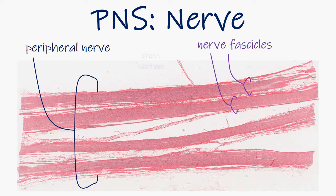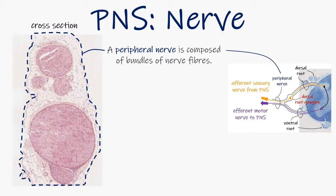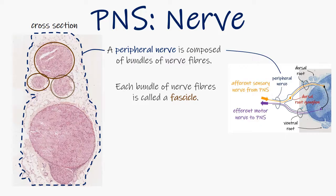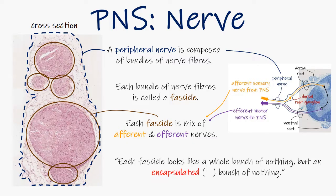Now let's look at a peripheral nerve in cross-section. What this means is that we will look down the length of the nerve fascicles in the manner, that is, in cross-section, that you will most routinely see them in many of the connective tissues and organs of the body. Here is an example of a peripheral nerve in cross-section. Begin by orienting yourself to this slide, which is a peripheral nerve composed of bundles of nerve fibers. Each of these bundles is called a fascicle, and we can see five of them in cross-section. These fascicles are composed of both afferent and efferent nerves. Beginners at histology often have difficulty identifying fascicles of peripheral nerves in sections of tissues or organs, and I am rather fond of saying that you are looking for structures that look like a whole bunch of nothing, but an encapsulated by connective tissue, bunch of nothing.